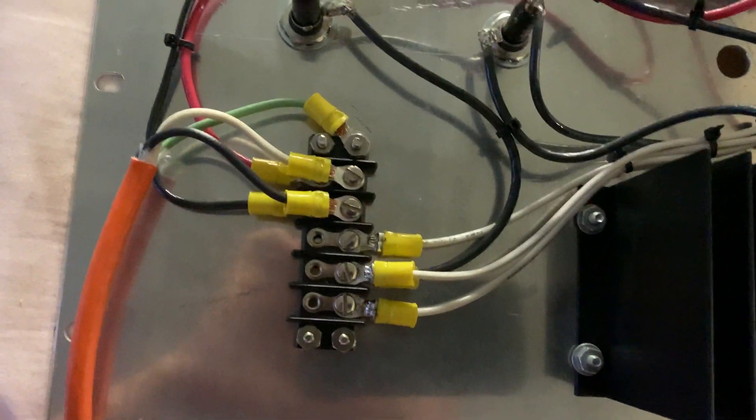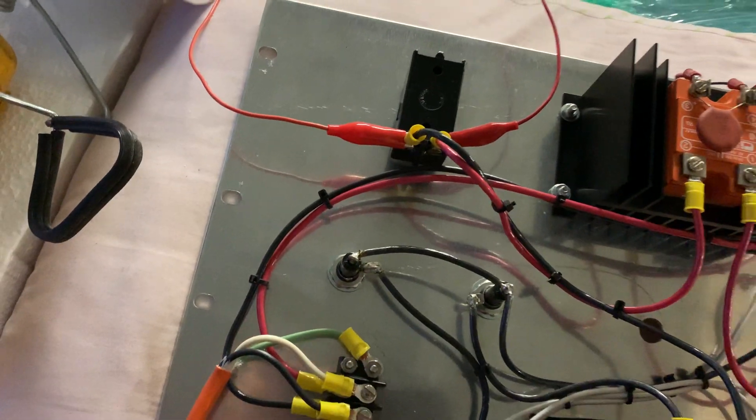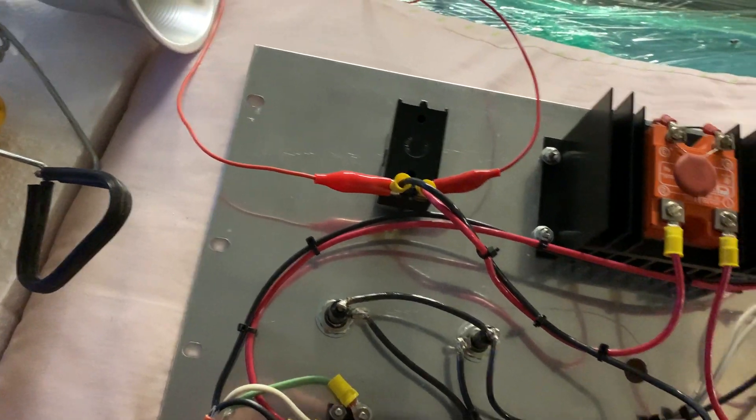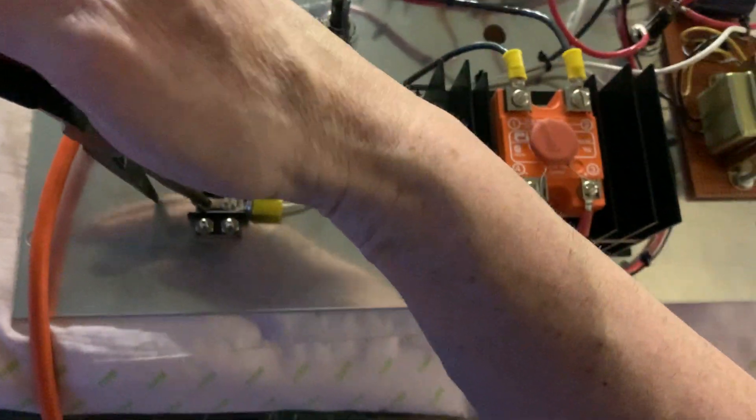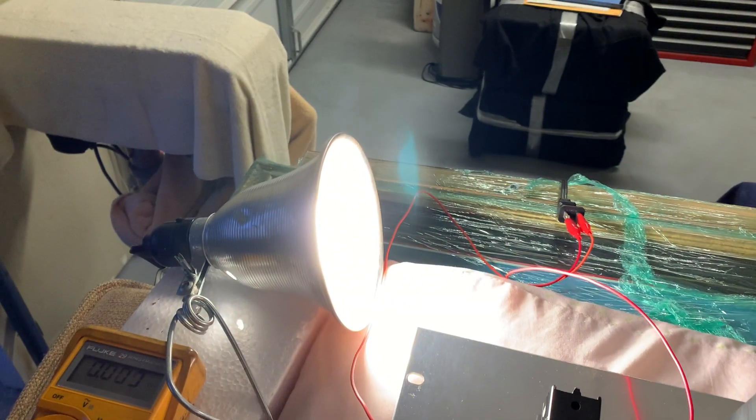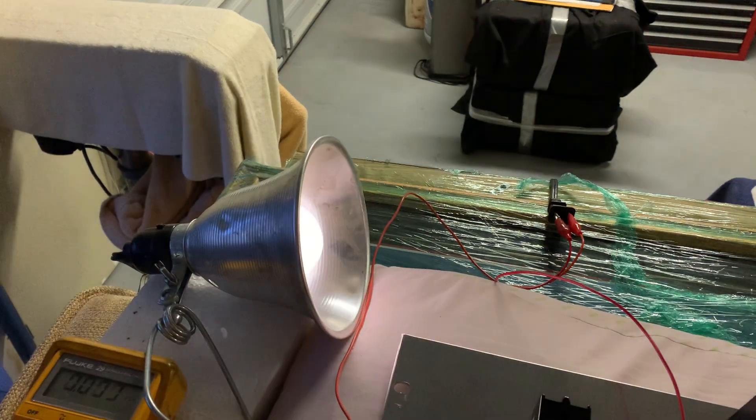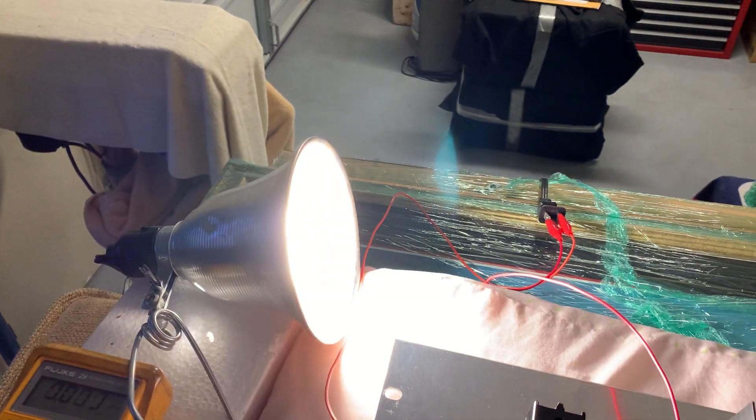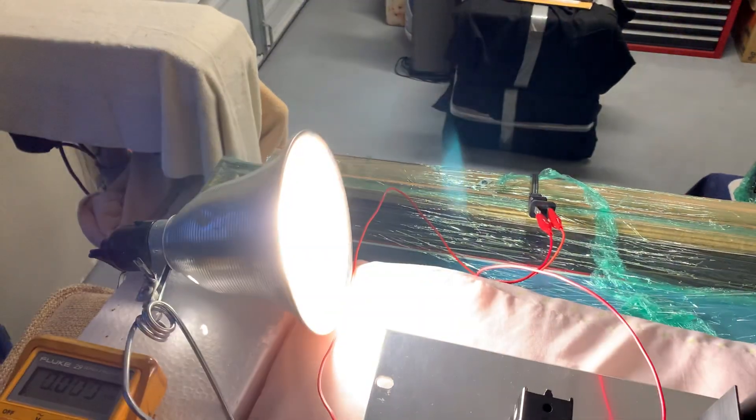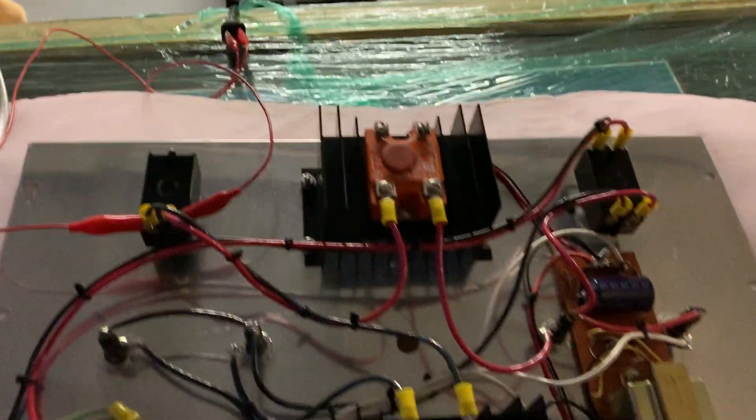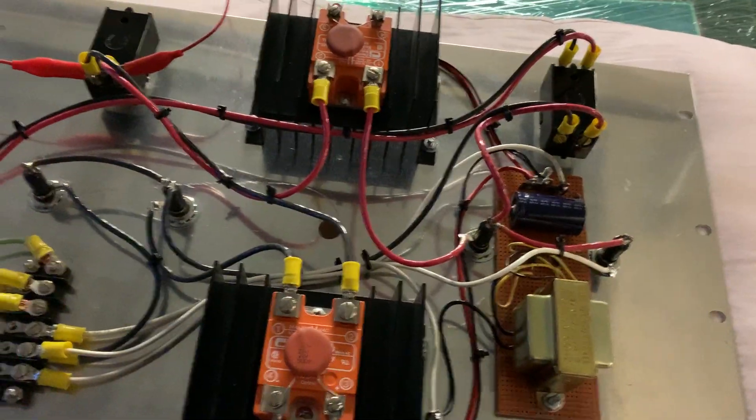But this is the PTT line down here. So when I key the mic, basically it's going to ground this, if you can see here, ground that line here. And basically, boom, the plate transformers get the primaries engaged. See? Boom. 120 volts. Boom. PTT. And that's using two 40 amp relays.